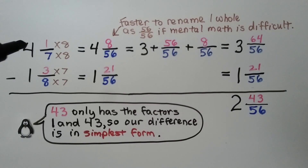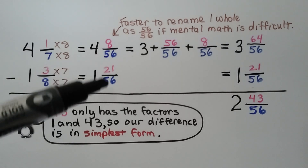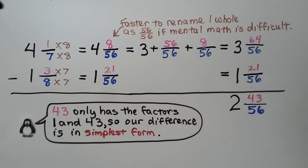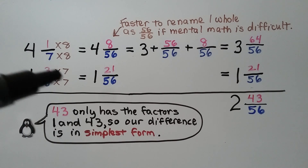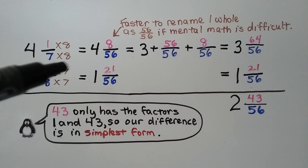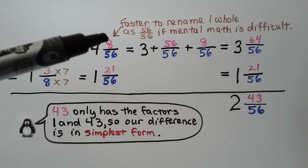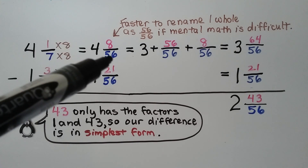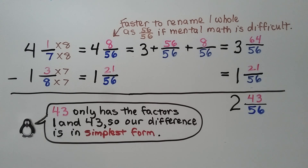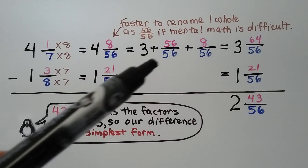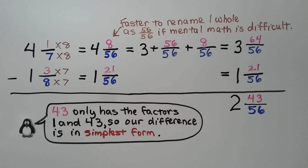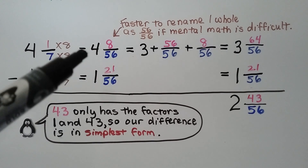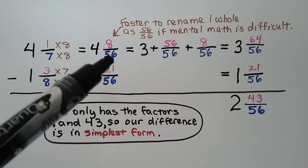Here we have 4 and 1 seventh minus 1 and 3 eighths. With 7 and 8, we can just multiply them to find a common denominator: 56. 7 times 8 is 56, so we multiply 1 times 8 to get 8. 8 times 7 is 56, so we multiply 3 times 7 to get 21. We can see that this numerator 8 is not great enough to subtract 21. We could do 4 times 56 plus 8, but it's faster to rename 1 whole as 56 fifty-sixths if mental math is difficult. So this 4 becomes a 3, the one we took away becomes 56 fifty-sixths, and then we have the 8 fifty-sixths.